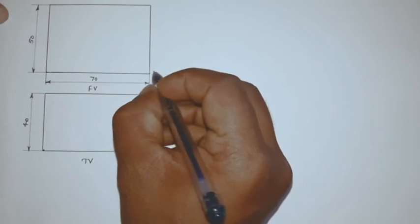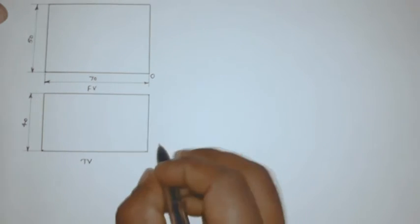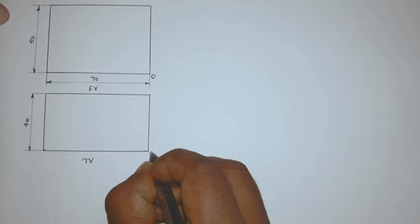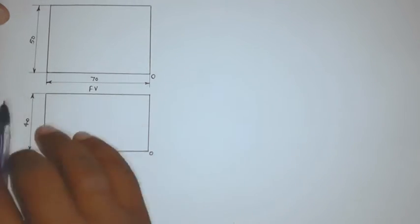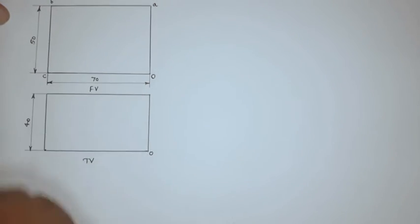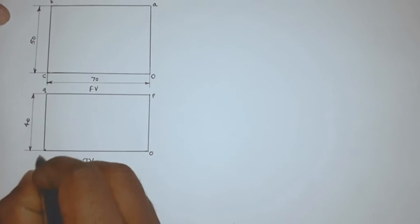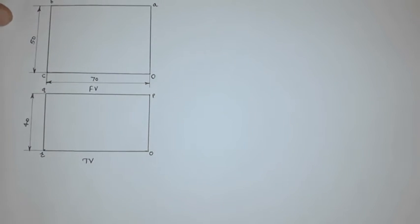So first of all, we have to look at O. In this case, O is the origin for this component. Suppose I look at O here, then in the top view the O will be here. Then in this component, if I assign the point name to this, this will be A, this will be B, this will be C. Then if I assign point names here, that is P, Q, and R.